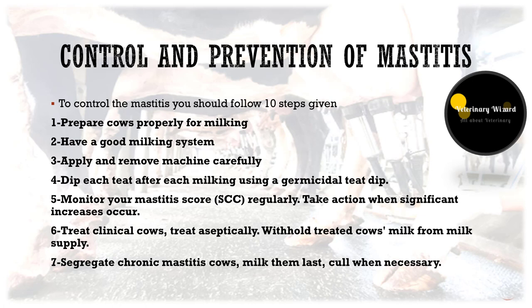Here are ten steps to control and prevent mastitis. First, prepare the cow for milking — use pre-dips of iodine or other pre-dipping agents such as chlorhexidine, as this can reduce risk of infection up to seventy percent. Second, have a good milking system — milking equipment should be adequate in size, functioning properly, and regularly cleaned and maintained. Third, apply and remove the machine carefully, properly adjust to prevent liner slippage, and remove the machine when the cow is milked out, shutting off the vacuum at the claw before removal.